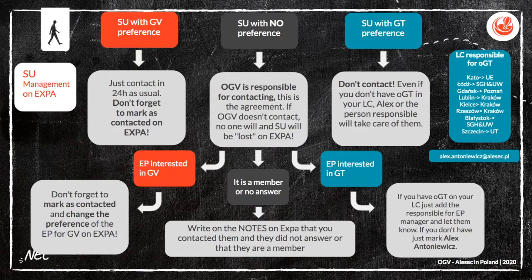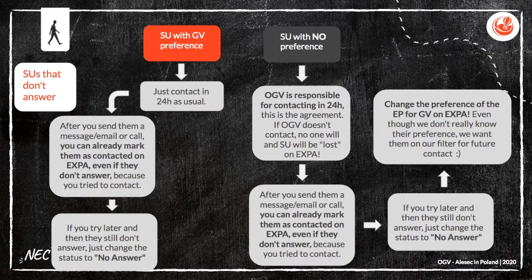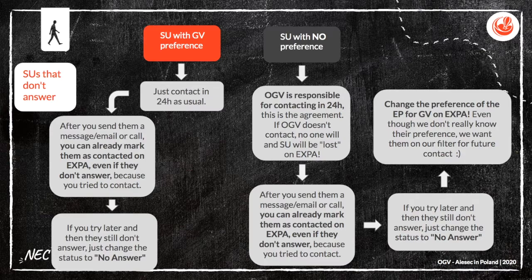Maybe this person is interested in GT, so you shouldn't contact them. This is another scheme for how to contact people properly. Contact within 24 hours as usual. After you send them a message, email, or call, you can already mark them as contacted on Expa, even if they don't answer, because you tried to contact. If you try later and they still don't answer, just change the status to no answer. If this person has no preferences, you have to contact them within 24 hours. Mark as contacted on Expa, and if they still don't answer, change the status to no answer. Then change the EP's preferences to GV on Expa — even though we don't really know the preferences, we want them on our filter for future contact.